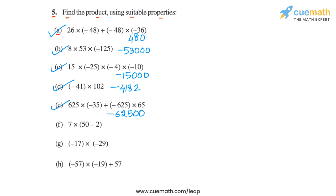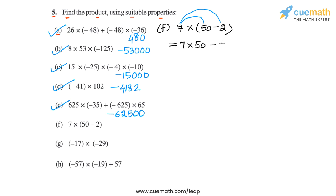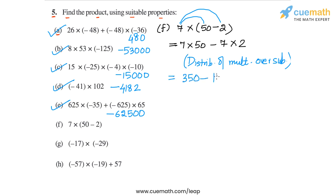Let's go to part F, where we have to calculate 7 into 50 minus 2. We distribute 7 over both terms — 50 and 2 — writing it as 7 into 50 minus 7 into 2. This uses the property that multiplication is distributive over subtraction. So 7 into 50 is 350 minus 7 into 2 is 14, giving 350 minus 14, which equals 336.